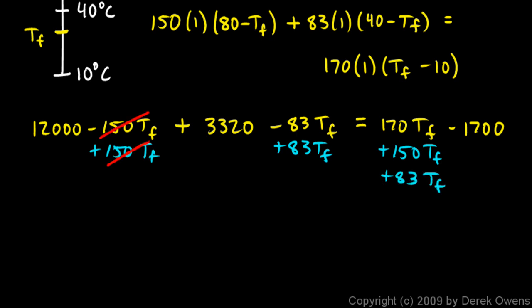And over here these all cancel out. And if I add 1700 to each side, on the left over here I have 1700, then on the right these cancel out.